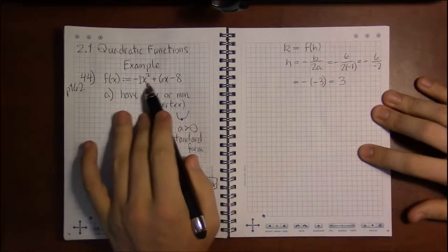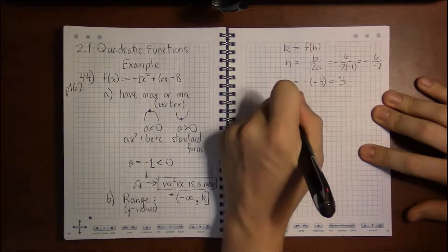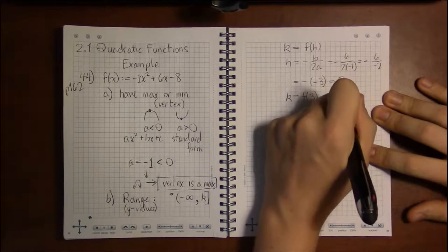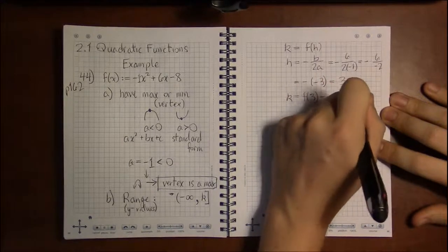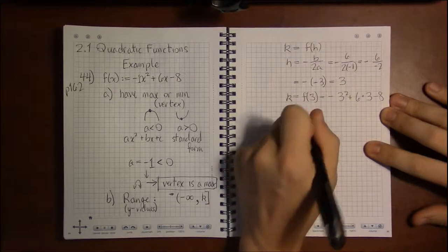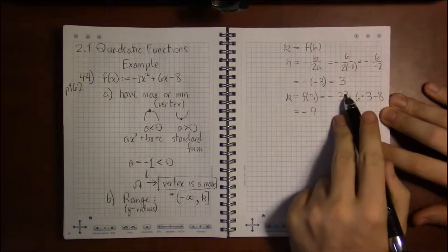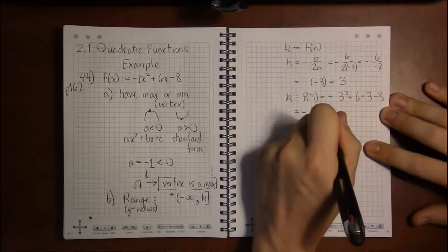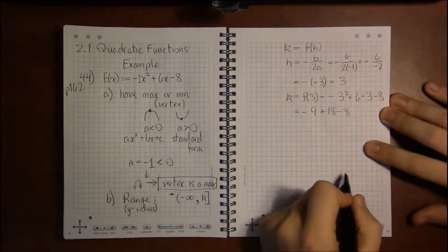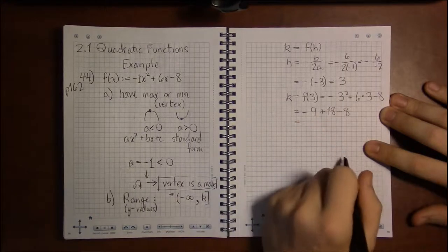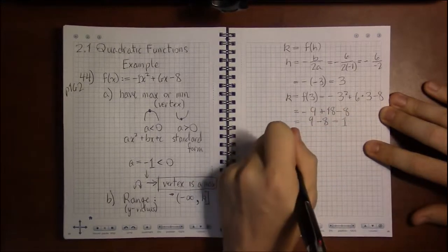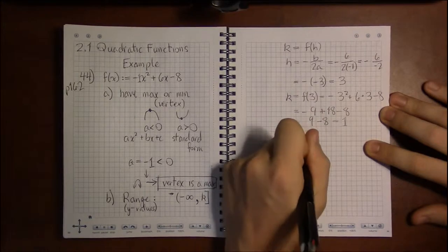We take that h and plug it back in for x to find k. We're looking for f of 3, and that's going to be minus 3 squared plus 6 times 3 minus 8. So 3 squared is 9, remember square first before multiplying by the negative. Minus 9 plus 18 is 9, then subtract 8 and we get 1.